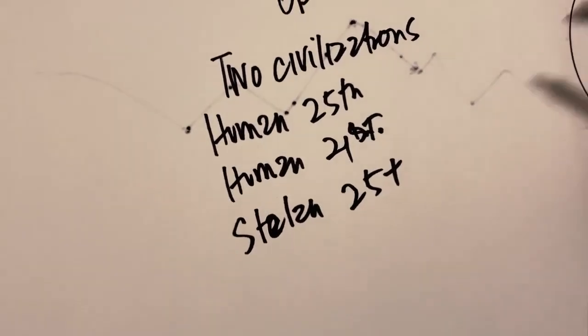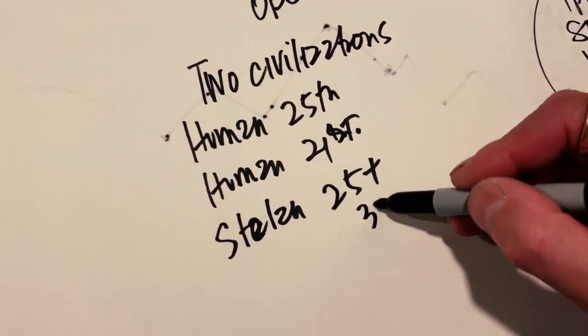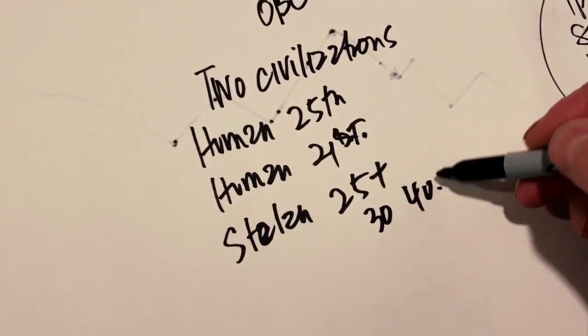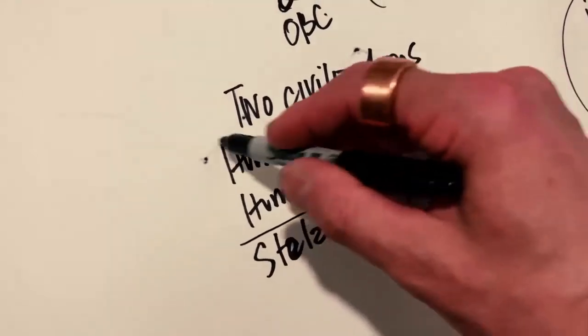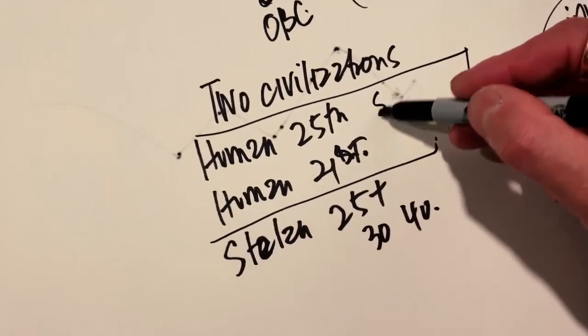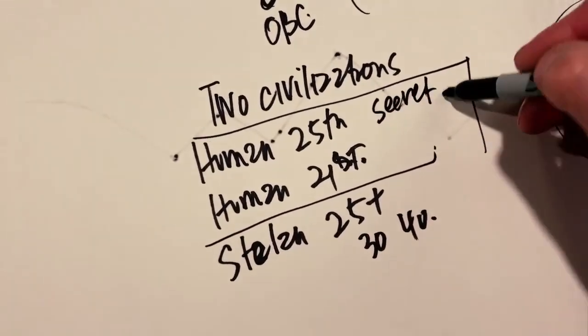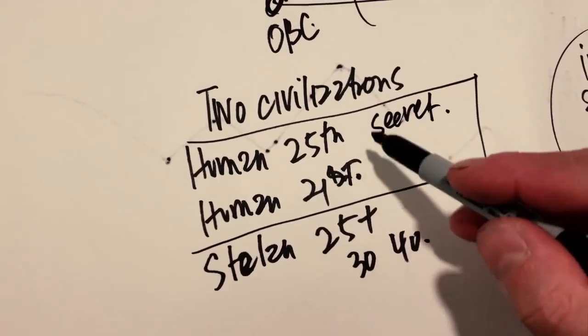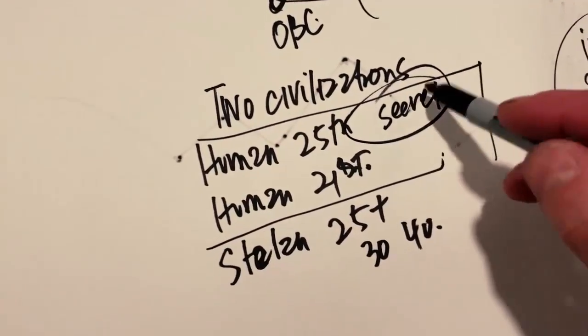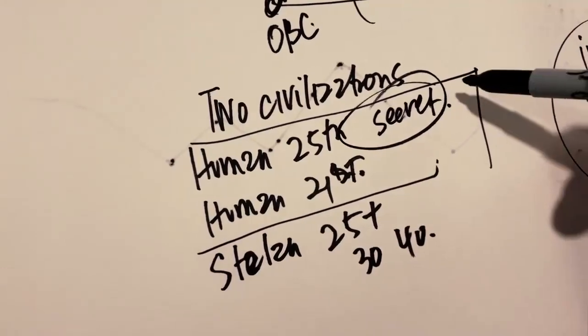They can go much higher. They can be 30, 40, who knows? But this group is in secret and they now can control the planet and they can manipulate society and the masses.